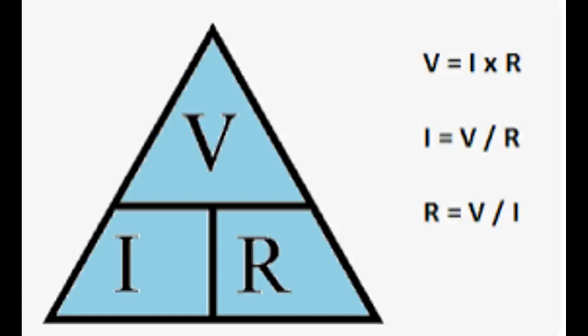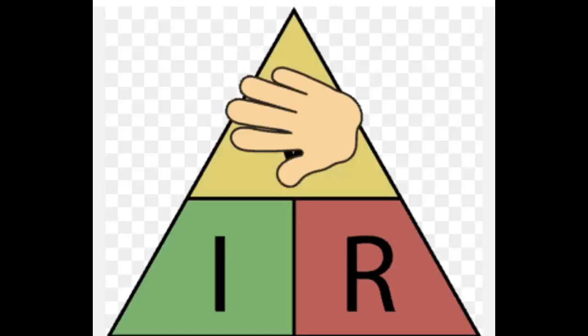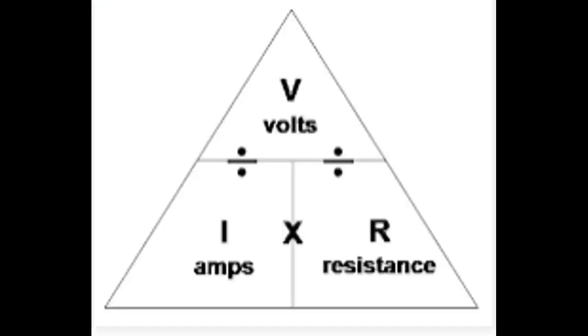When we need to use our formula, all we have to do is cover up the letter we need. So if we want to find the voltage, we write V and then cover up the V in the triangle. That leaves I and R, so we multiply I by R, which equals voltage equals current multiplied by resistance. If it helps, you can write a small multiplication symbol in the triangle.